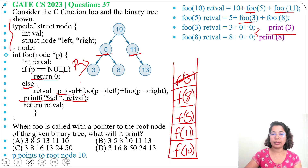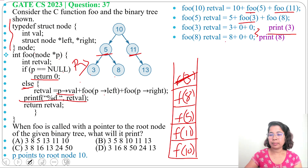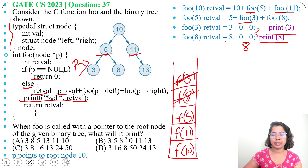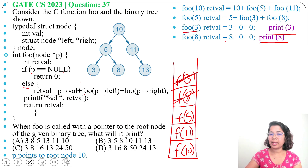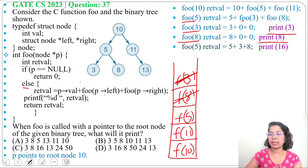Next we call foo(8). p is not null, so the else part executes. Return value is 8 plus foo(left child) plus foo(right child). Node 8 has no children, so both return 0. Return value equals 8, and it prints 8. Back in foo(5): 5 plus 3 plus 8 equals 16. foo(5) returns 16 and prints 16.